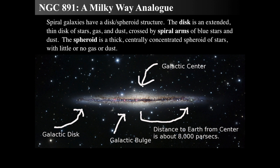This is NGC 891, a spiral galaxy that has a similar appearance to our Milky Way. All spiral galaxies have a disk and a spheroidal structure. The spheroidal structure starts at the galactic center, with a disk bulge around it and a halo of globular clusters. The disk is an extended thin disk of stars, gas, and dust — we see the dust as a dark band. The gas is illuminated by red flares, like Orion nebulas glowing because of hot young stars inside. The spiral arms are hard to see because this galaxy is being seen edge-on, but spiral arms are composed of young stars, gas, and dust.